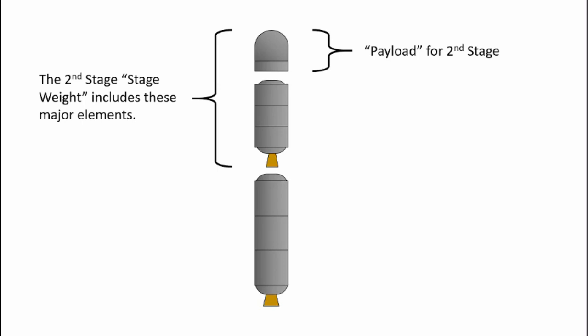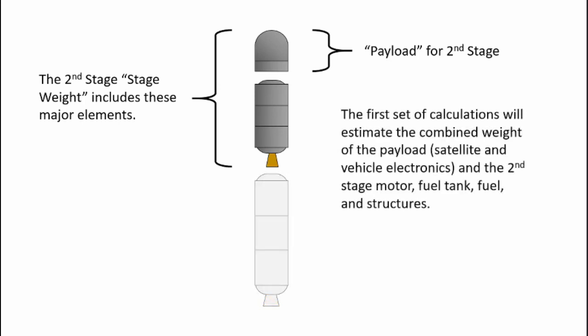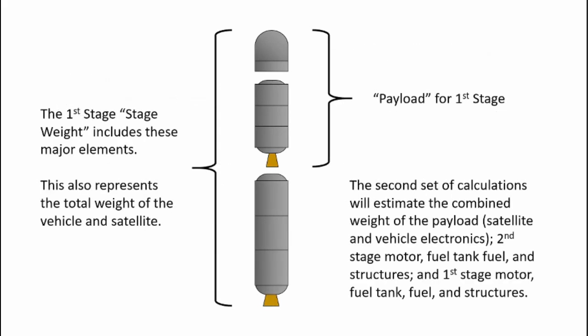Here's our configuration — the payload is shown at the top, and the second stage is shown by the bracket on the left. The first set of calculations will estimate the combined weight of the payload (satellite and vehicle electronics) and the second stage motor, fuel tank, fuel, and structures. When we do the second calculation for the entire launch vehicle, we will treat the upper stage as the payload in those calculations.